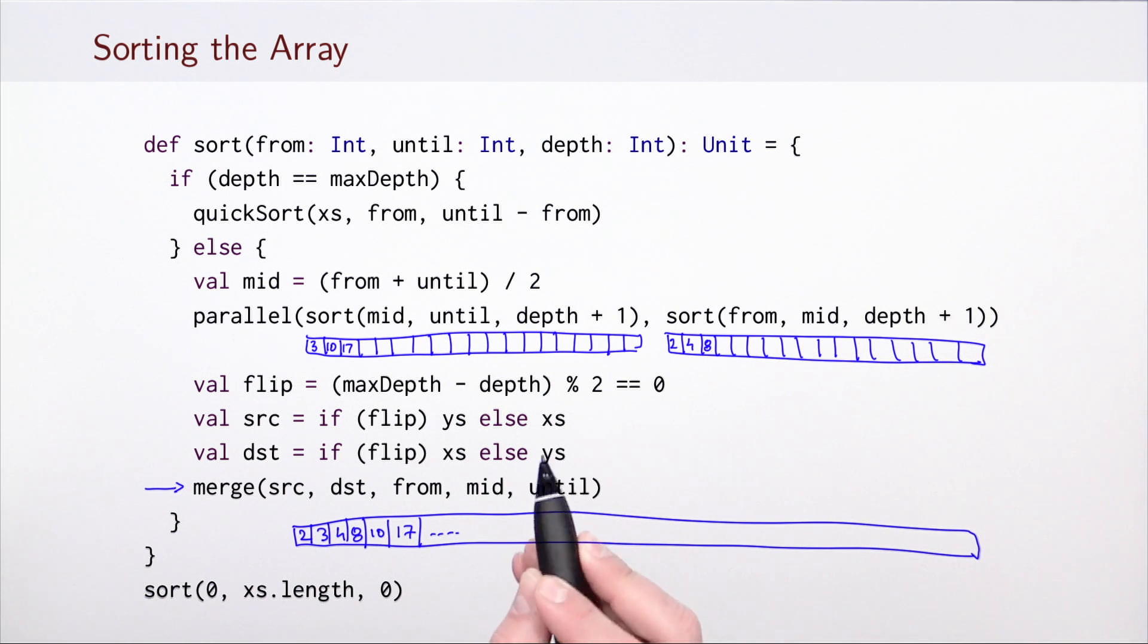Whether xs or ys is auxiliary storage is determined by whether the current difference between max depth and depth is even or odd. The flip boolean variable determines whether this is the case. According to the value of flip, source and destination will either be ys and xs or the other way around.